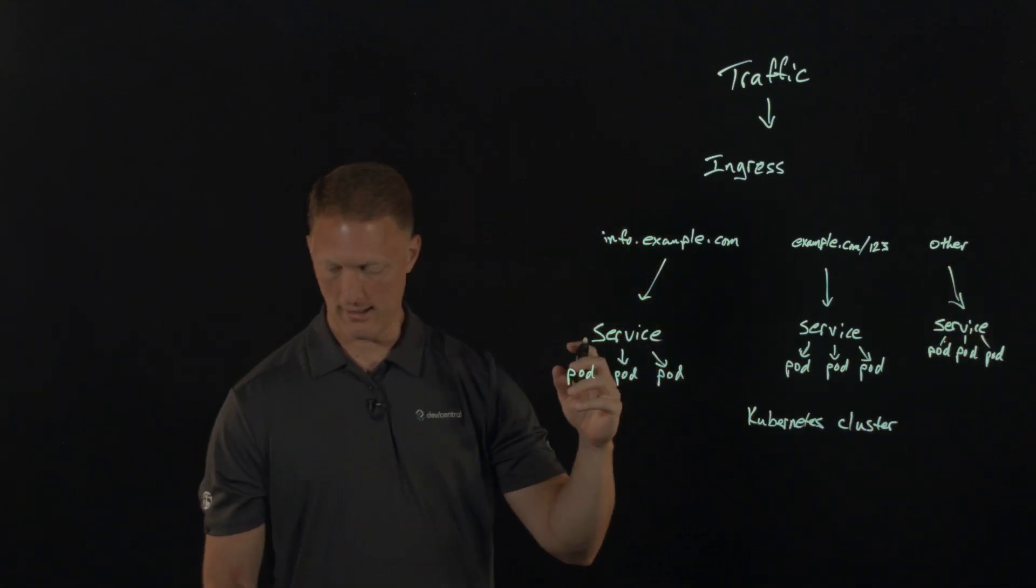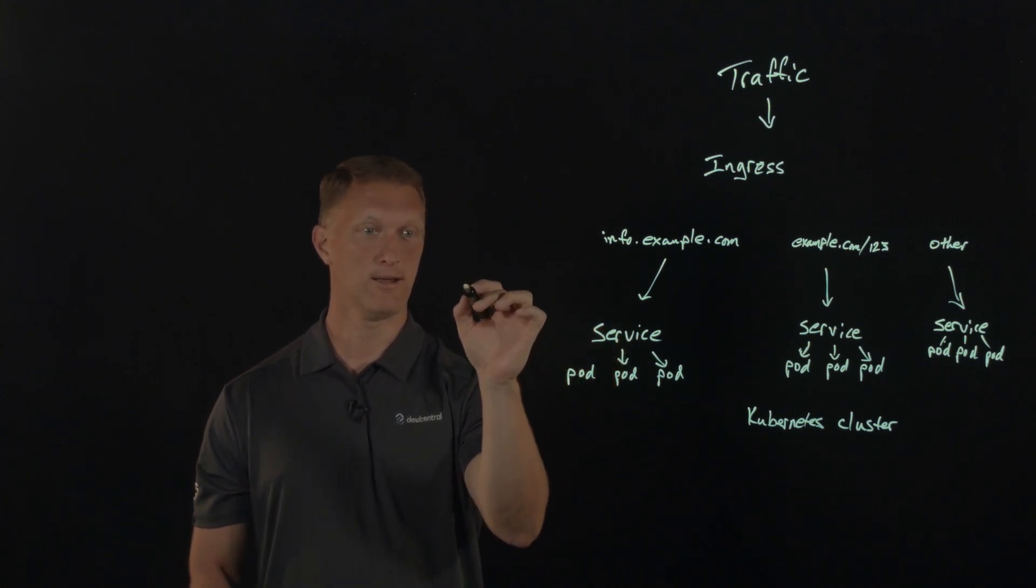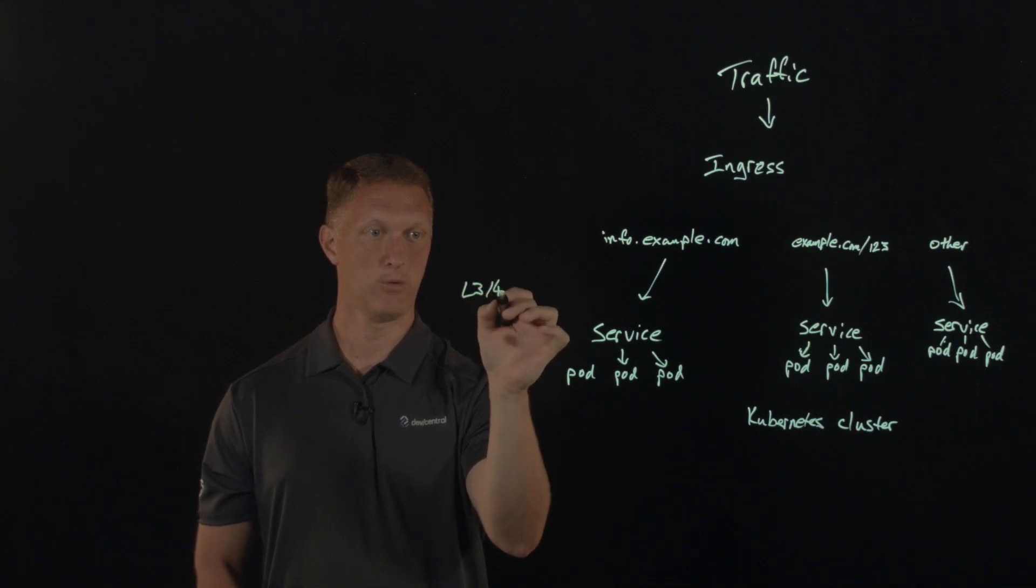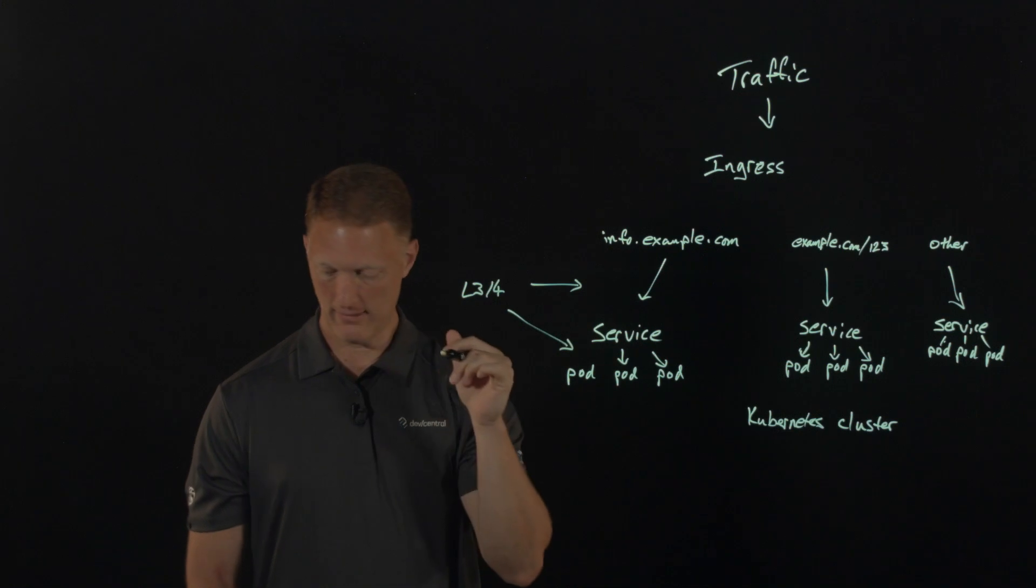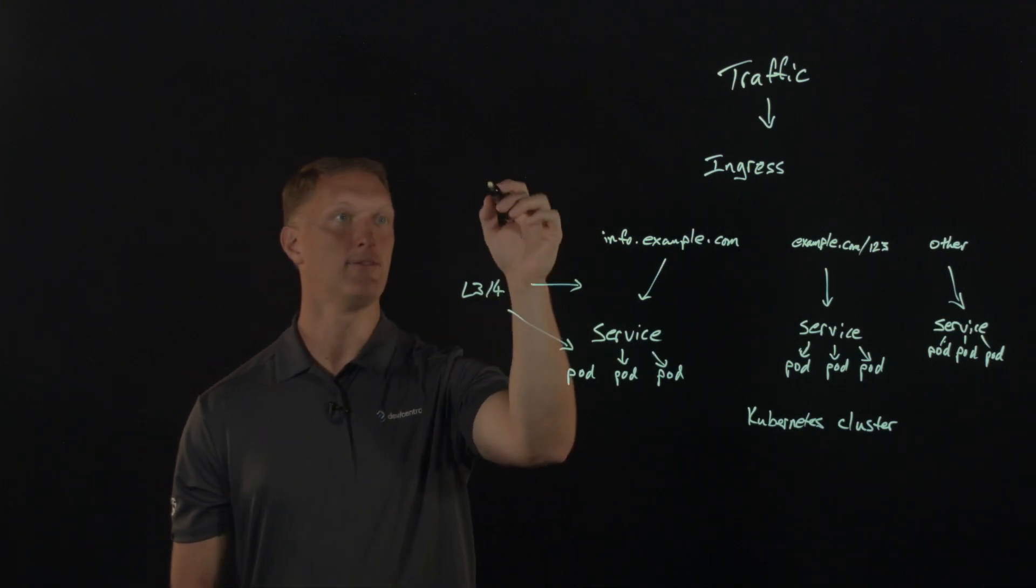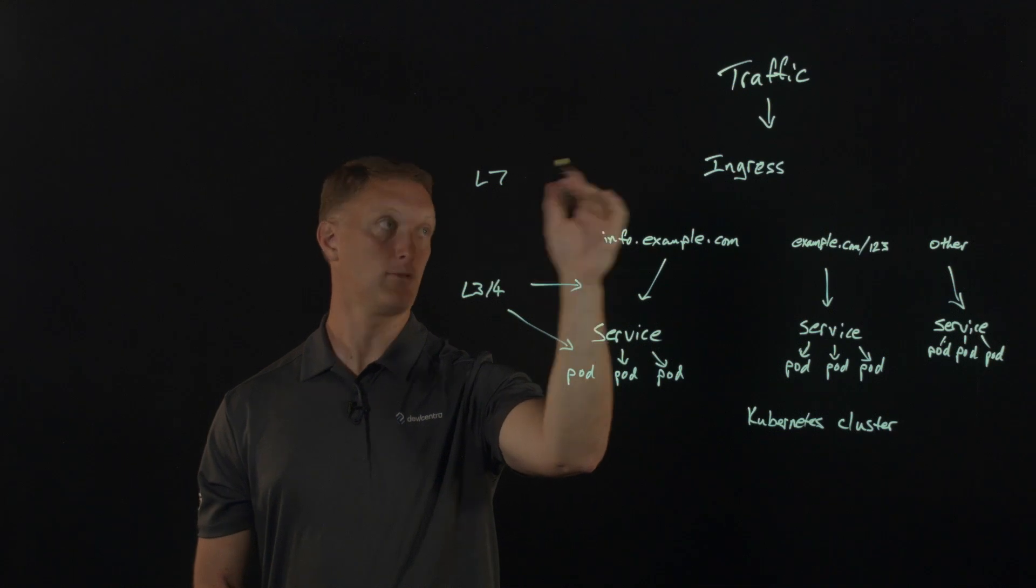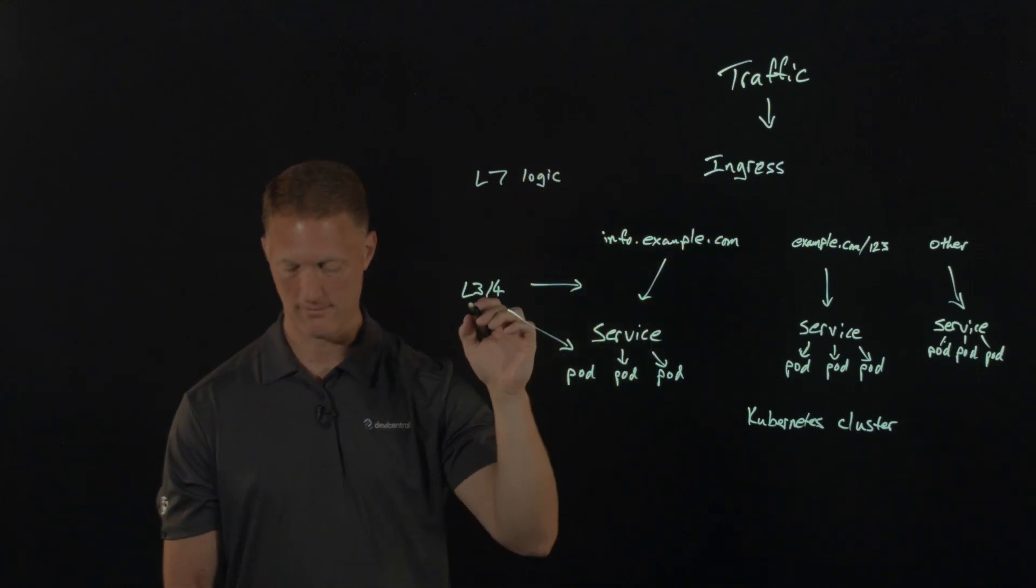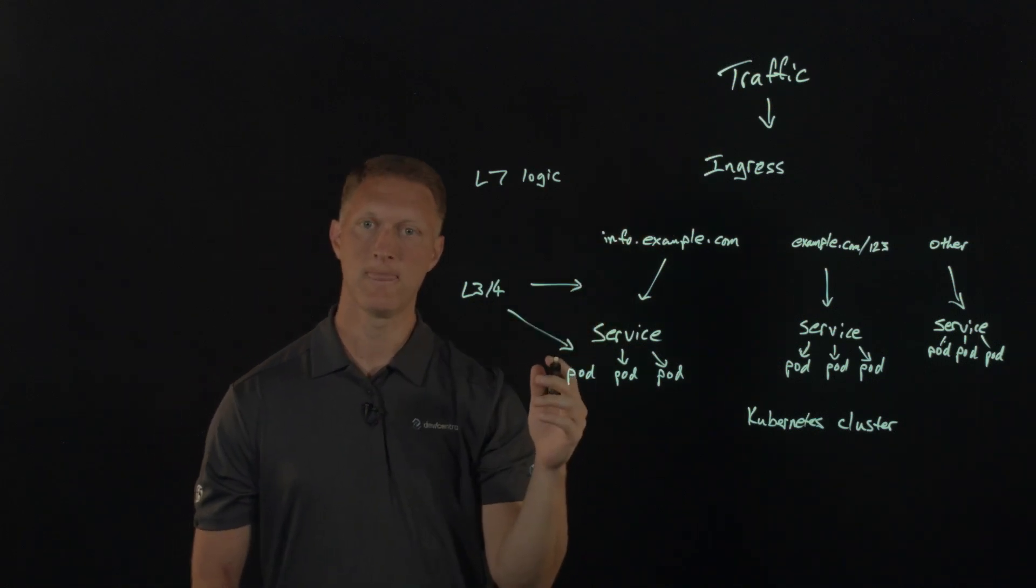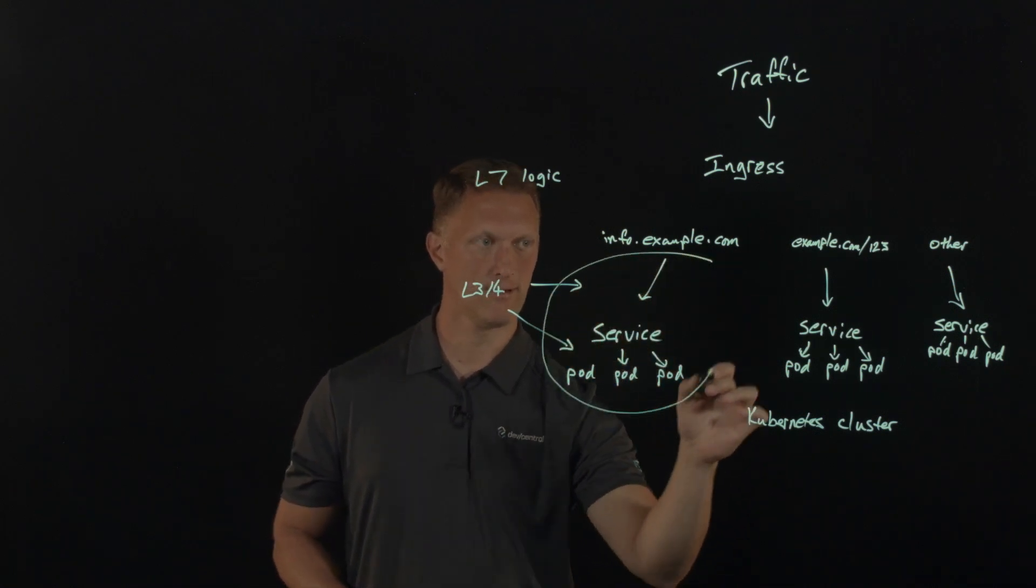The service mesh certainly is dealing with what I'll call layer three, four networking at like these locations right here. And then as well, you have layer seven. So I'll just put L7 logic. So this would be the ingress portion. Layer seven logic up here as traffic enters.